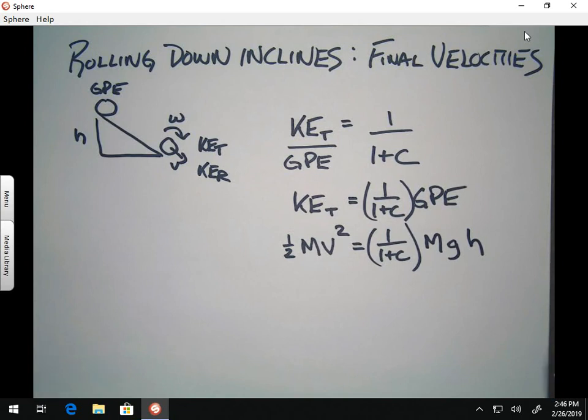So, that means that the object has a gravitational potential energy equal to MGH when it starts. So, what we want to do now is just basically solve for V, and that will tell us how fast the object is moving when it reaches the bottom.